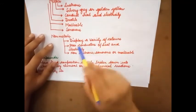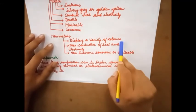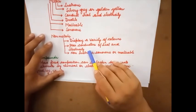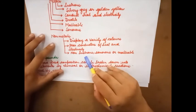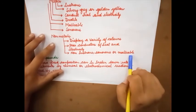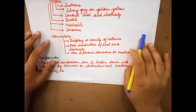Non-metals. They display a variety of colors. They are poor conductor of heat and electricity. Non-metals are non-lustrous, non-sonorous and non-malleable.